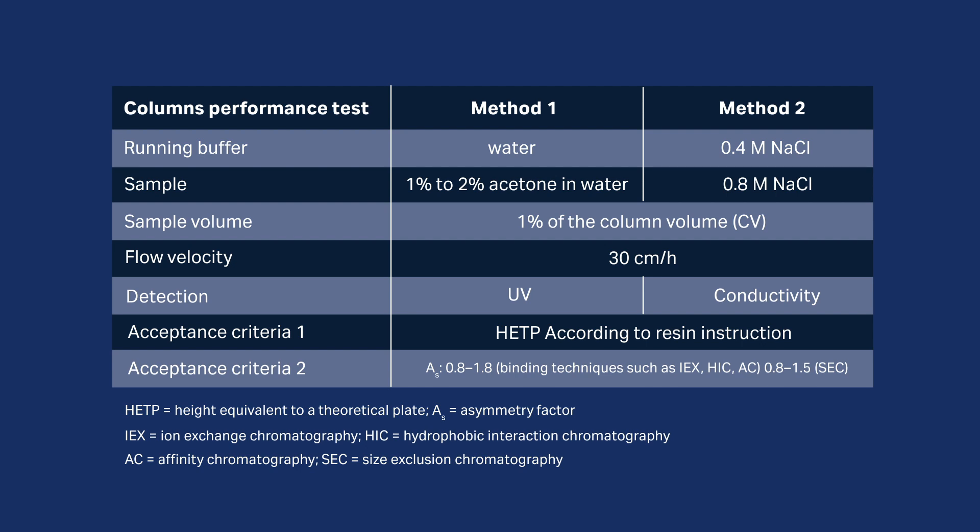One is using distilled water as mobile phase, 1% acetone as sample, and testing UV absorption at 280 nanometer wavelength. The other uses 0.4 molar sodium chloride as mobile phase, 0.8 molar sodium chloride as sample, and the conductivity curve is evaluated. The sample volume of these two methods is 1% of the column volume. The flow rate to use for both methods is 30 centimeters per hour.